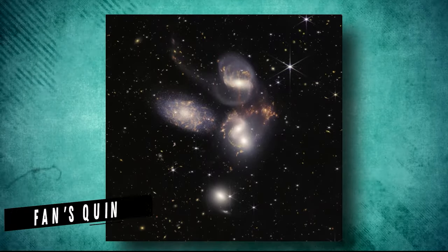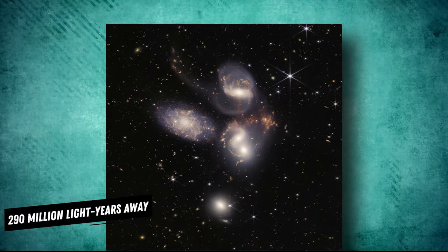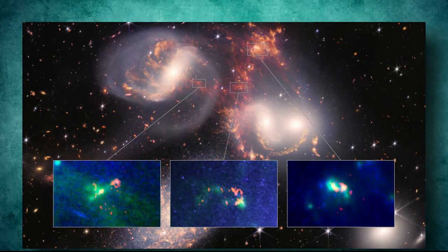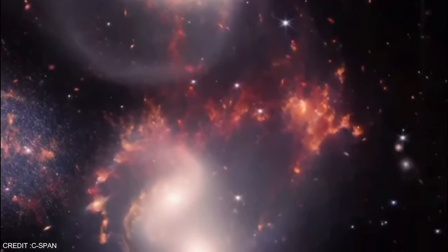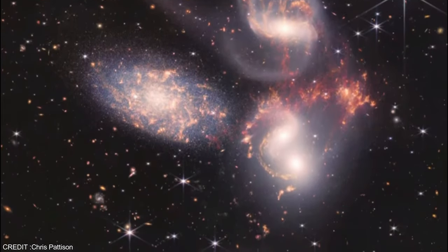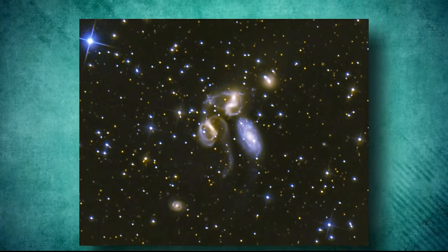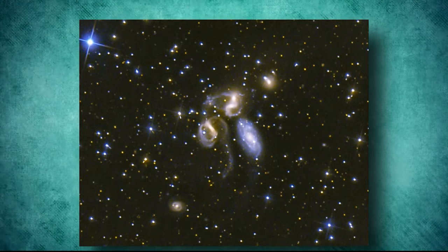A mesmerizing image of Stefan's Quintet, a compact group of galaxies located 290 million light years away. The image is a testament to the powerful capabilities of the telescope's infrared instruments, which have revealed stunning details of the galaxy group that were previously unknown. The image showcases clusters of young stars and bursts of star birth scattered throughout the group. Stefan's Quintet is a unique phenomenon as it appears that the five galaxies are gravitationally bound to each other, although only four of them are. The leftmost galaxy, NGC 7320, is much closer to Earth than the other four galaxies.